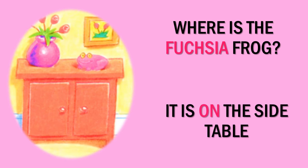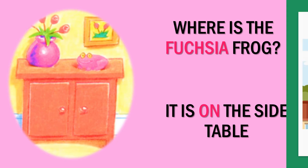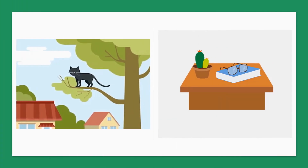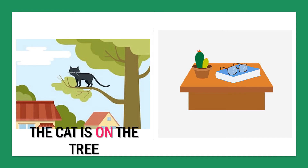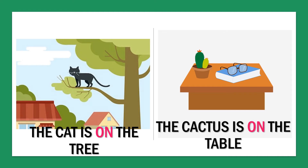Can you repeat with me? Where is the fuchsia frog? It is on the side table. Well let's see some examples. Where is the black cat? The cat is on the tree. Where is the cactus? The cactus is on the table.